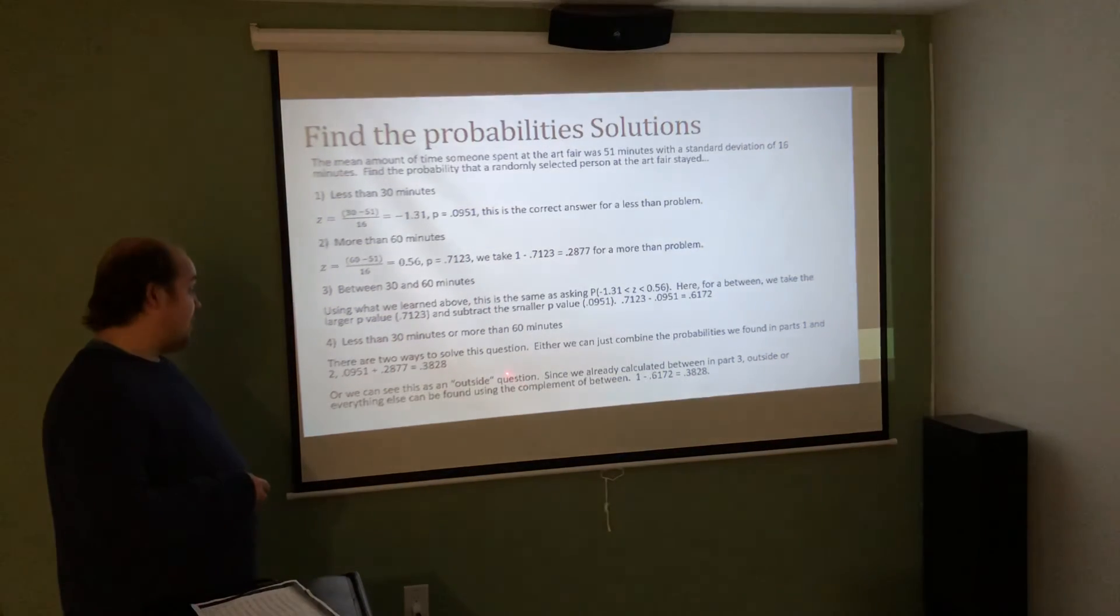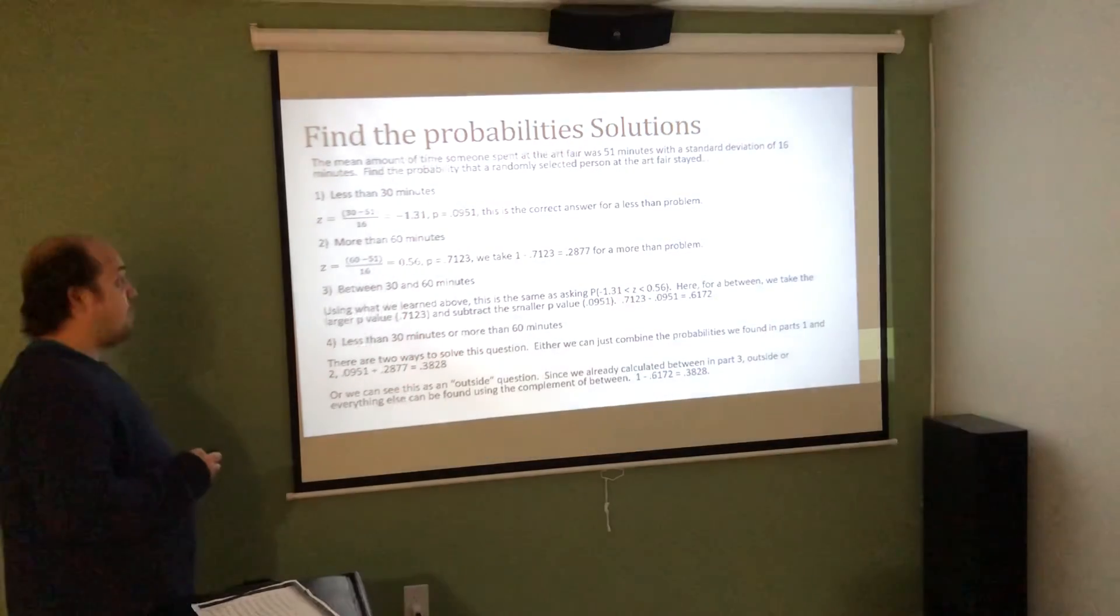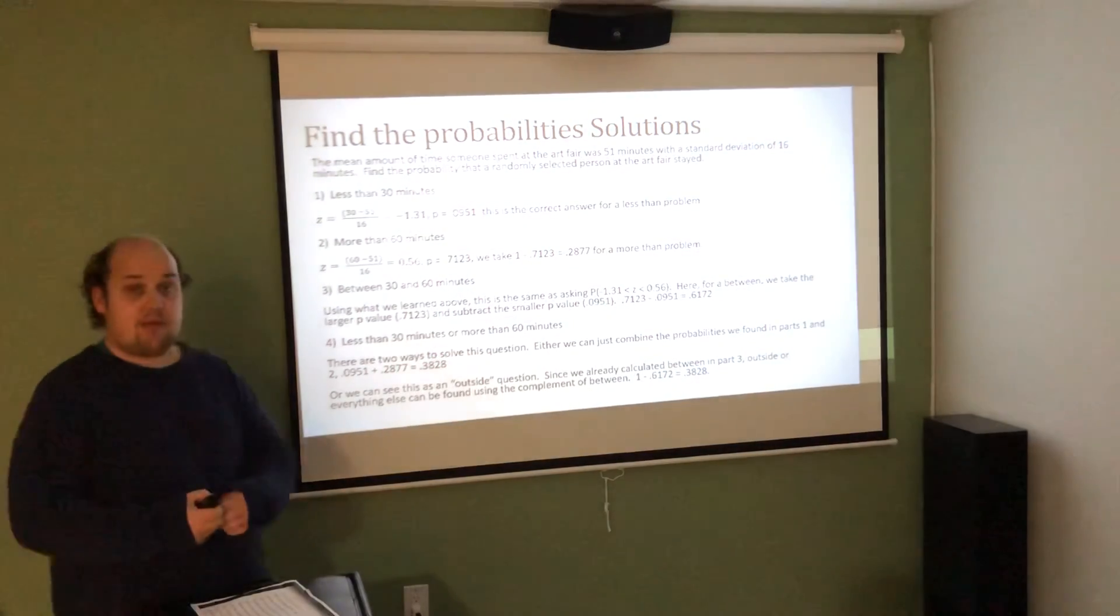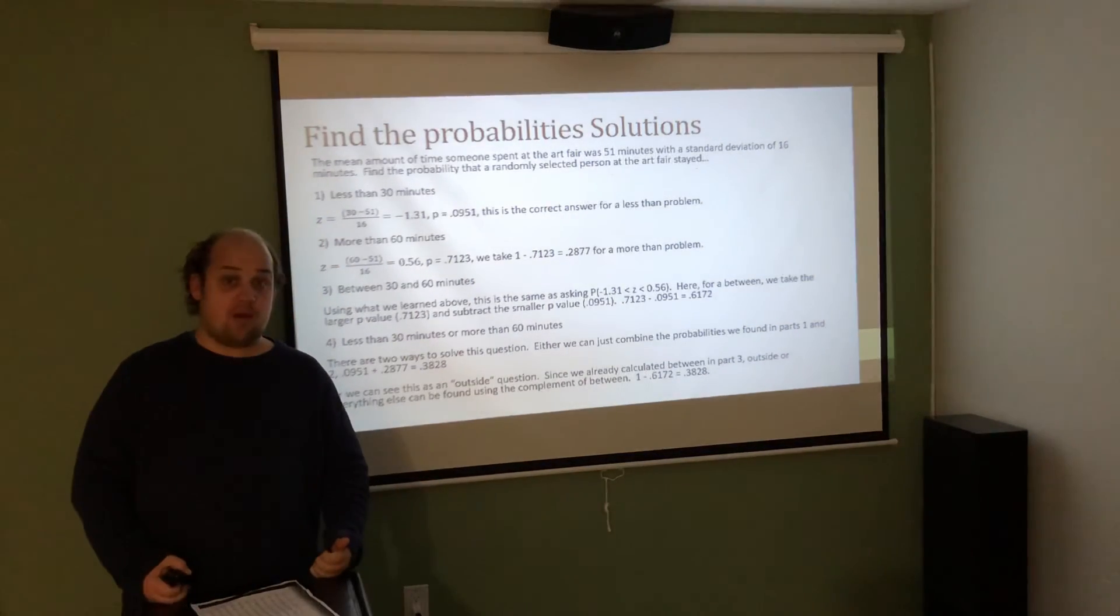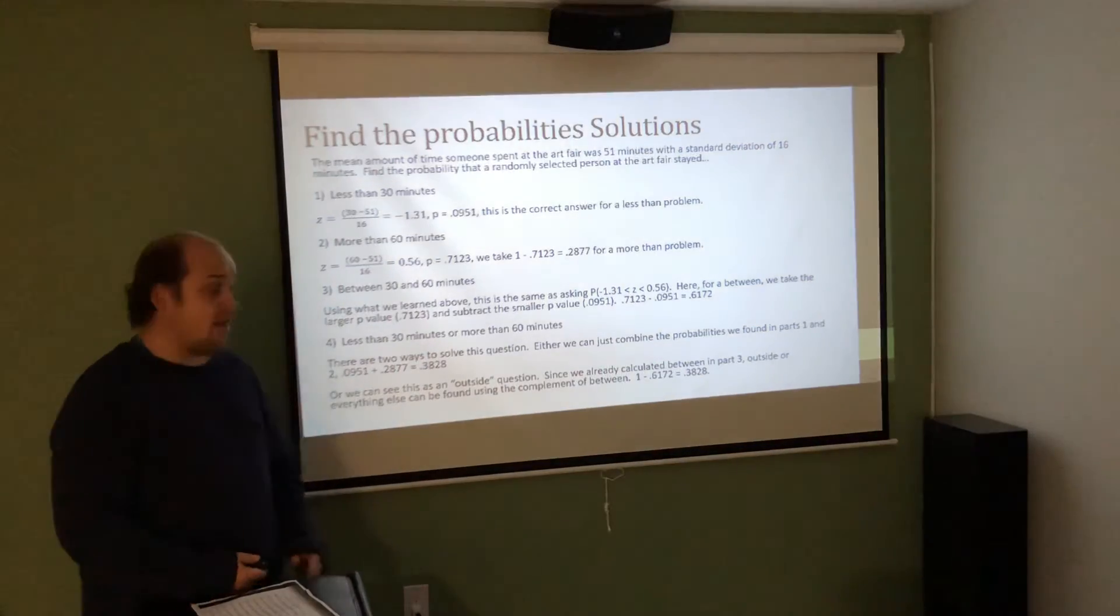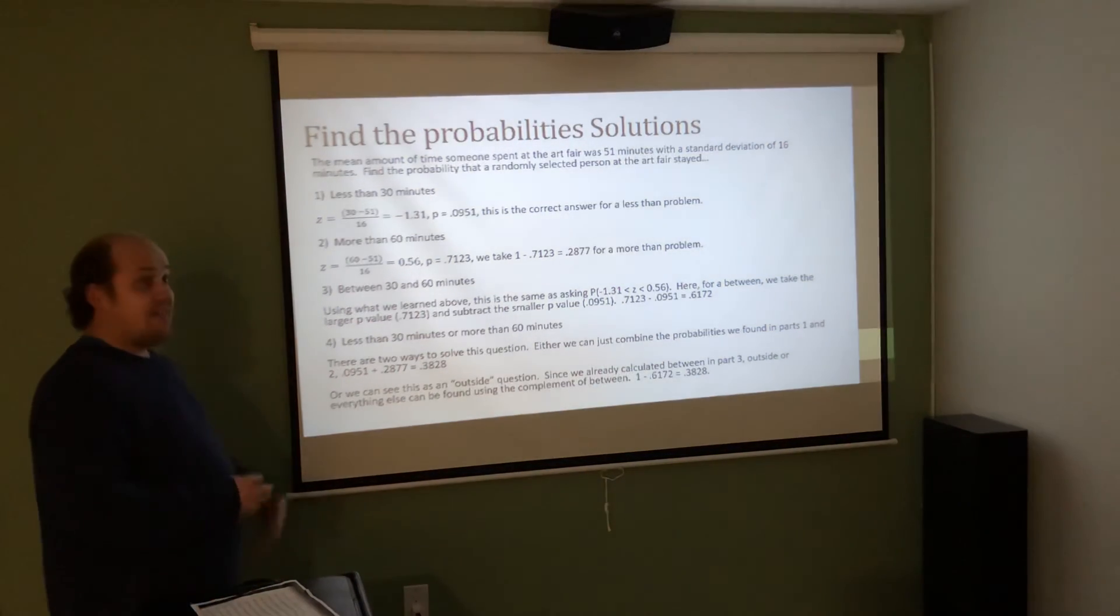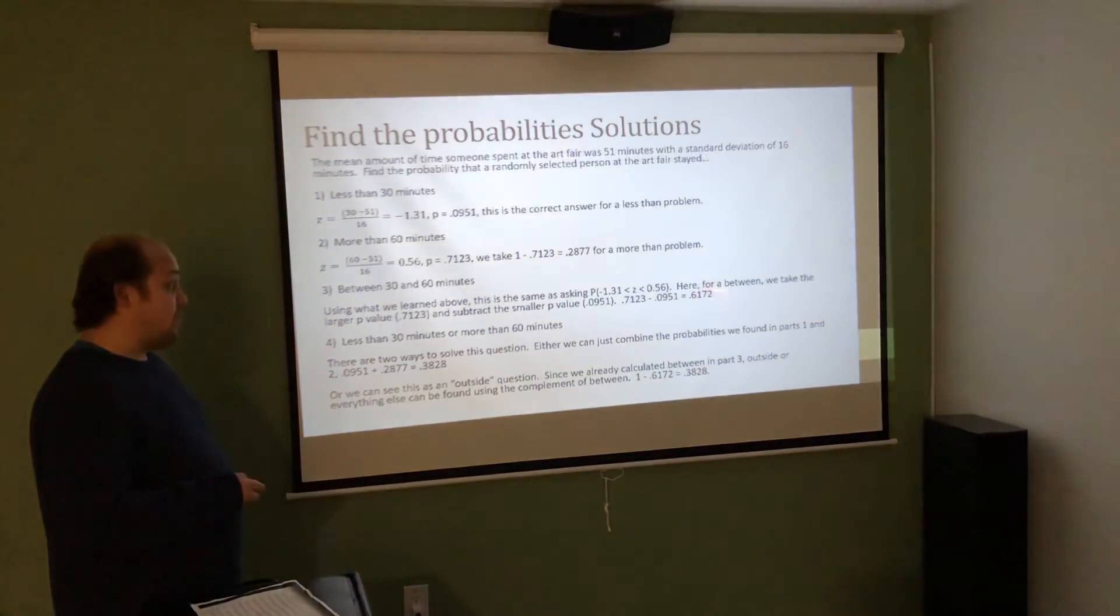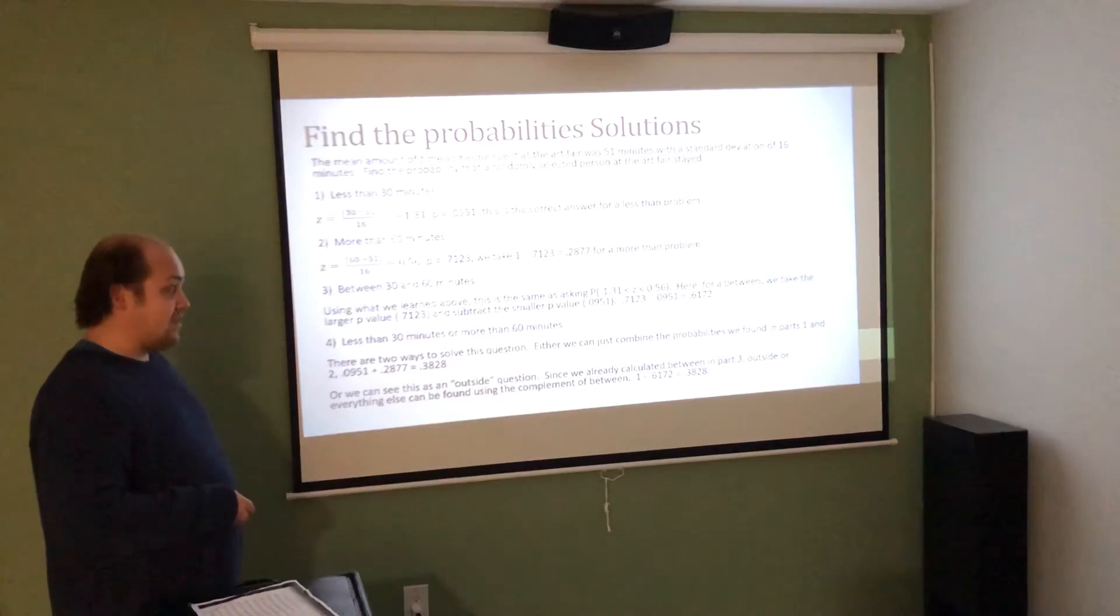When I'm asked less than 30 or more than 60, I either can see it as combining the two things we found in parts 1 and 2. So part 1, we found 0.0951. Part 2, we found 0.2877. If I add these two together, I get 0.3828 as the area less than the smaller number, 30, or more than the larger number, 60. The other way to get there is to see that, well, that includes everything except for the area between the two. So in problem 3, we found between the two was 0.6172. If all we did was take 100% of the values minus that 0.6172, that would get us to the same answer of 0.3828.